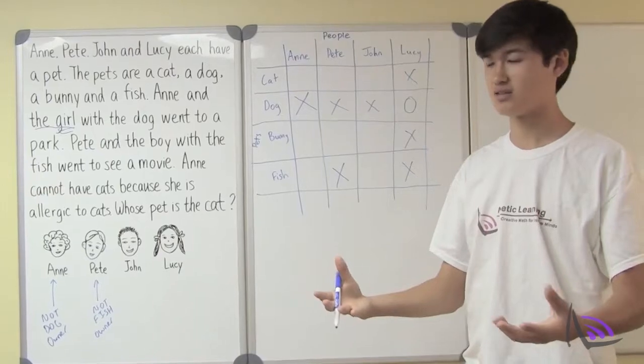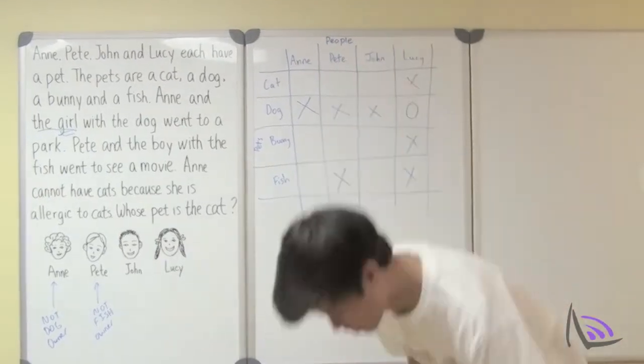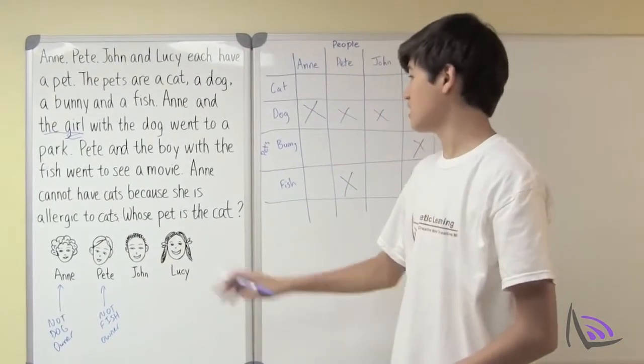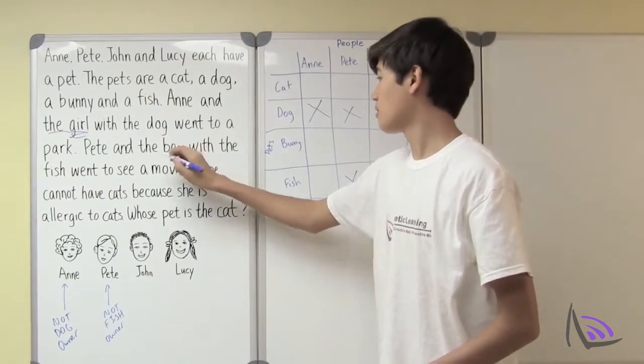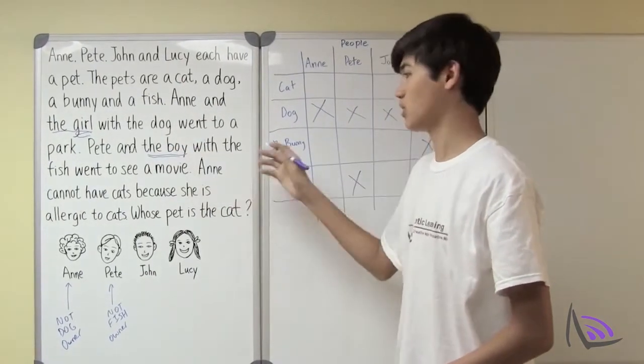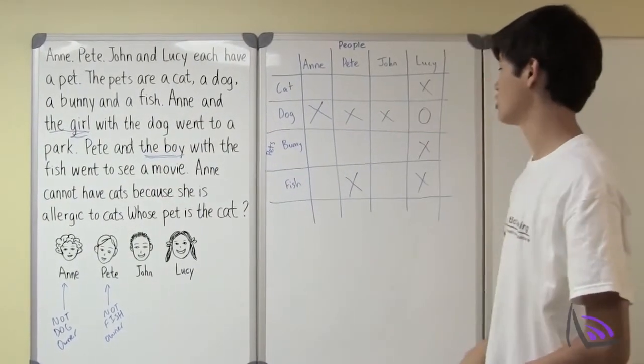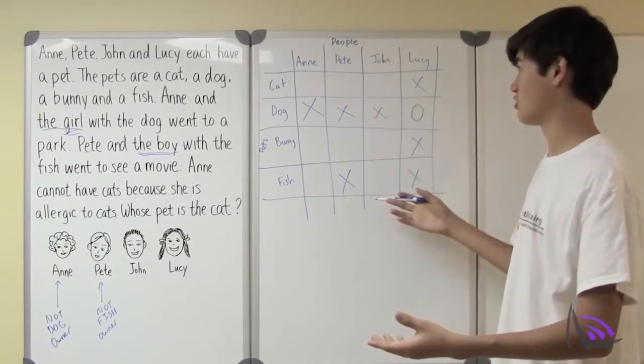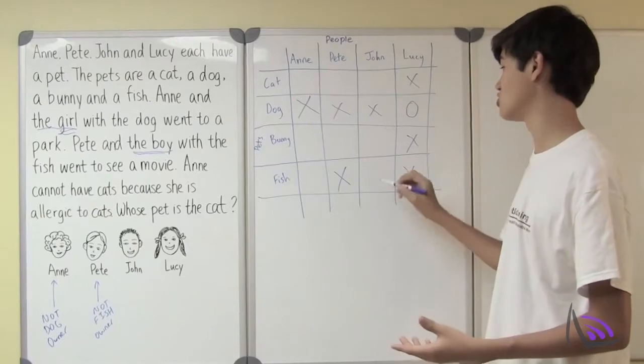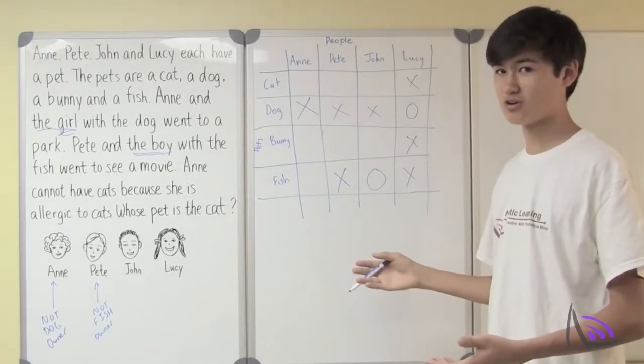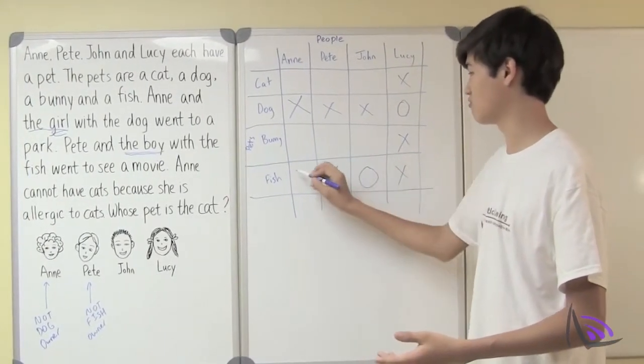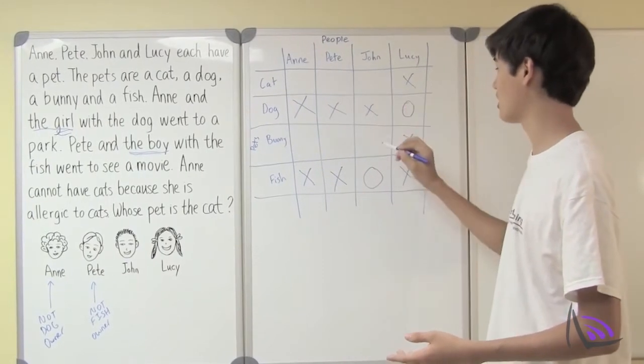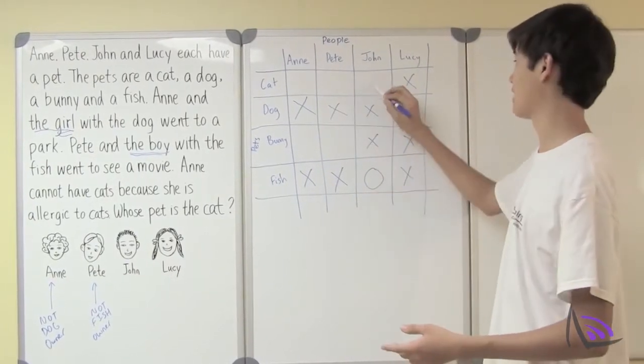Let's see if we can get anything else out of this sentence. So Pete and the boy with the fish went to see a movie. So Pete can't be the fish owner but a boy must be the fish owner. And the only other boy left is John. So John must be the fish owner. Which means no one else can be a fish owner and John can't own any other pets.